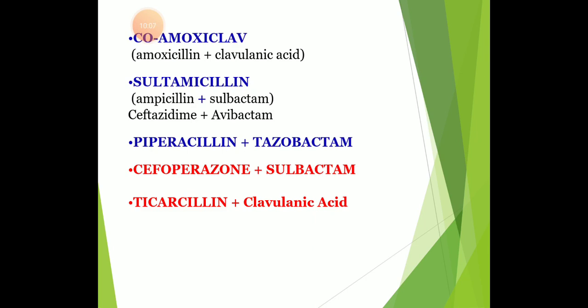The common combinations used in clinical practice are: amoxicillin-clavulanic acid, ampicillin-sulbactam, ceftazidime-avibactam, piperacillin-tazobactam, cefoperazone-sulbactam, and ticarcillin-clavulanic acid. Sulbactam is structurally similar to clavulanic acid and is combined in equal proportions with ampicillin, given IM or IV. Powder for reconstitution is available in 125 mg, 250 mg, 500 mg, and 1.2 g vials.